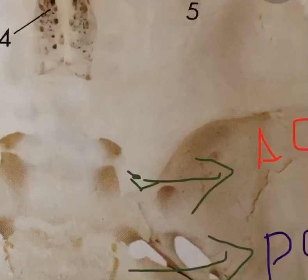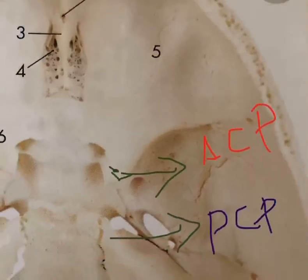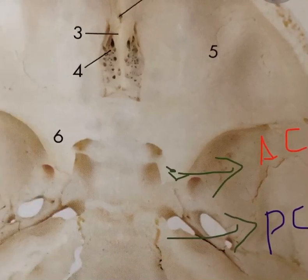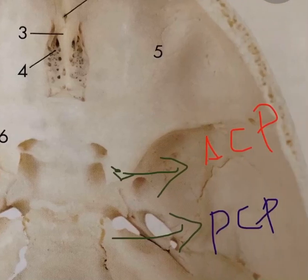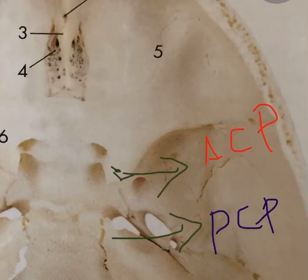Number one is the anterior clinoid process. This sharp structure I have marked is the anterior clinoid process, which is the end point of the lesser wing of sphenoid — that bone is marked as 6. The tip of the lesser wing of sphenoid is called the anterior clinoid process. Below that, I have marked the apex of the petrous part of the temporal bone, which is called the posterior clinoid process. So these two clinoid processes are very important: the anterior clinoid process is the anterior end of the lesser wing of sphenoid, and the posterior clinoid process is at the apex of the petrous part of the temporal bone.